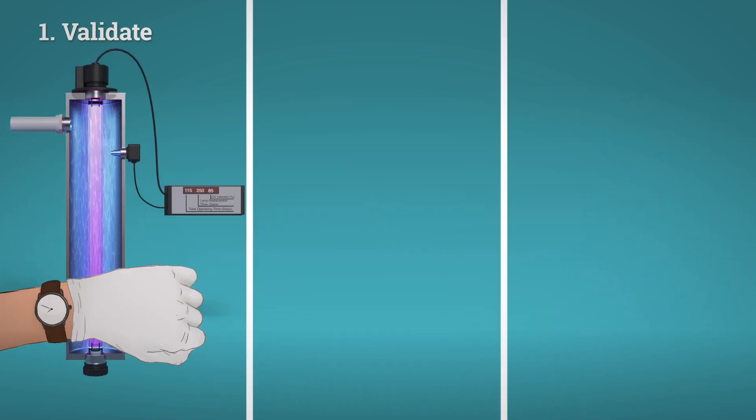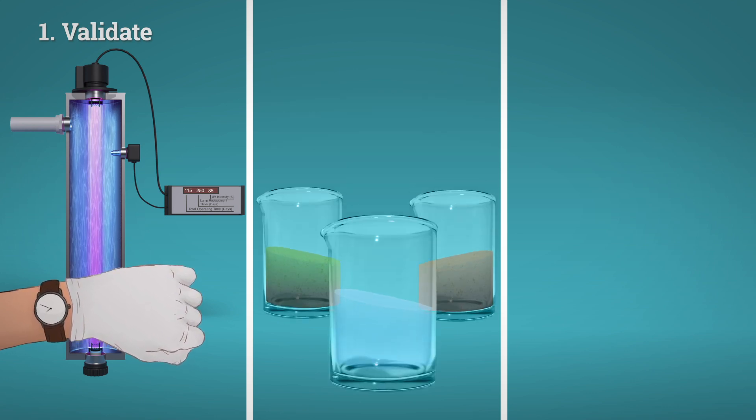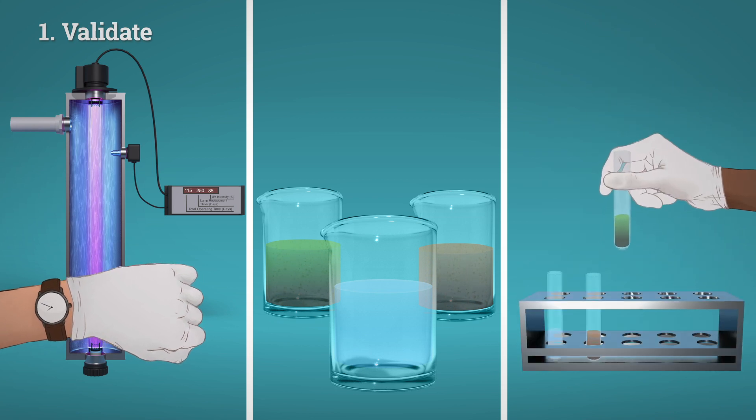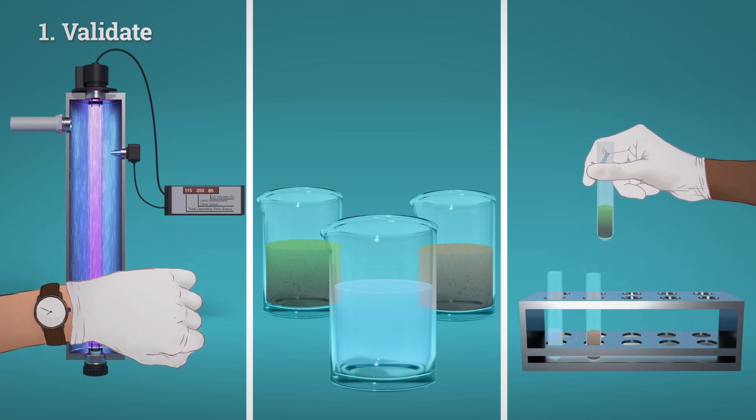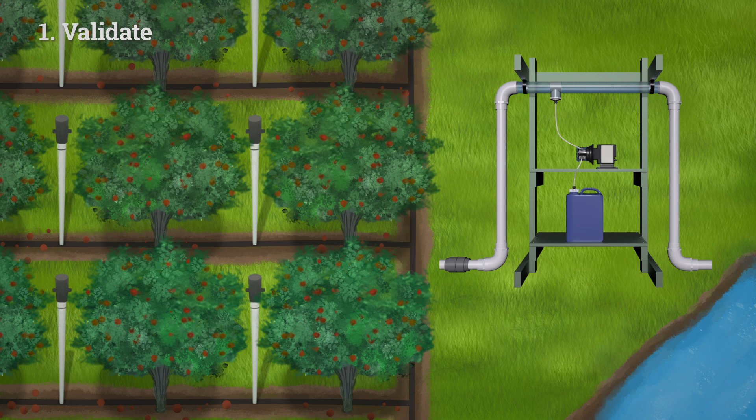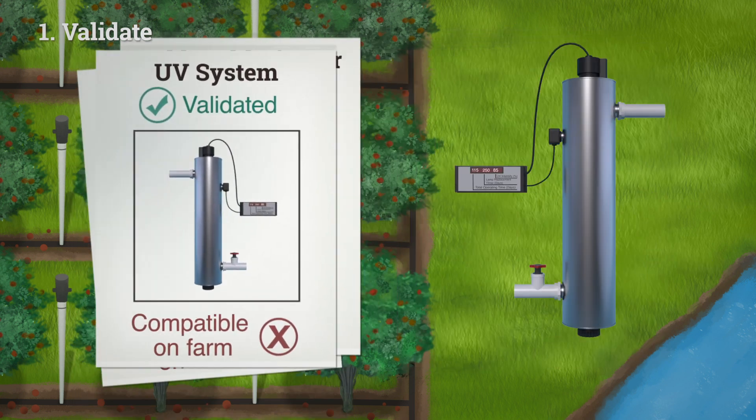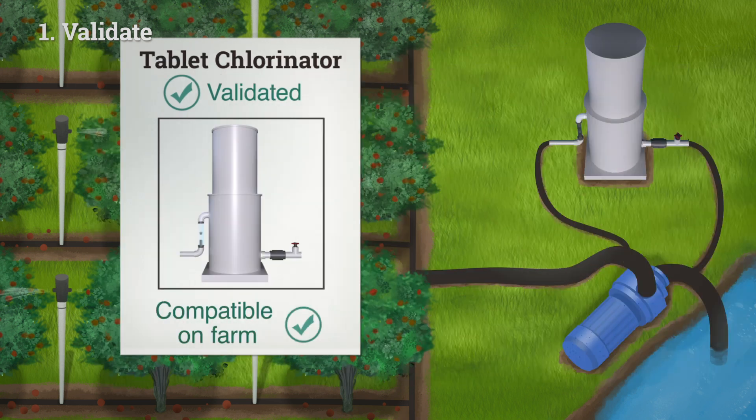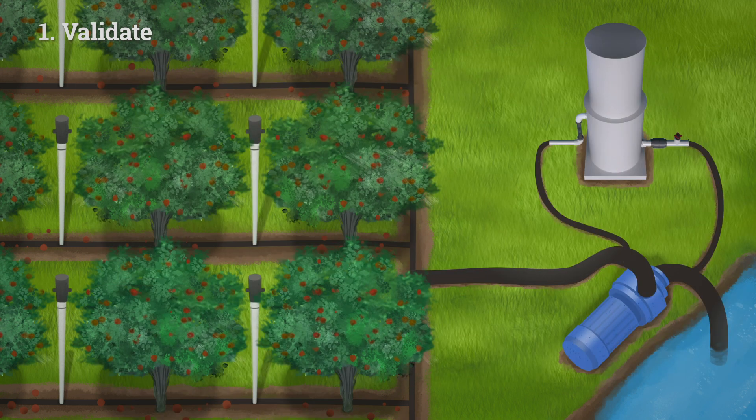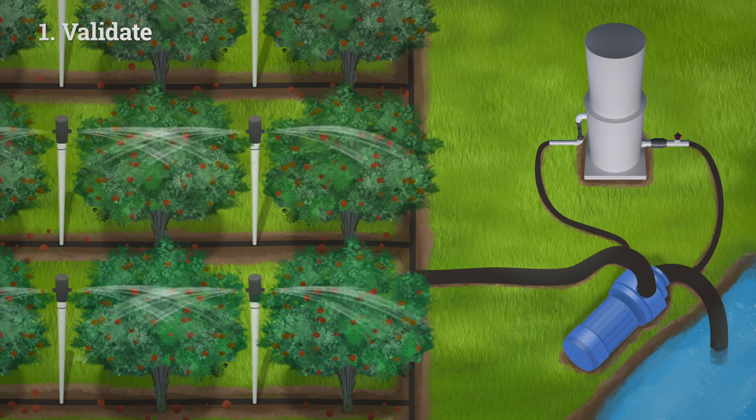Scientists validate treatment systems by doing experiments to understand what works to kill pathogens and indicator organisms like E. coli, and what conditions are important to control during treatment. When you select a validated method like chemical injection, tablet chlorination, or UV light, this work has been done for you. And you just need to validate that the system is installed and operated the same way on your farm.